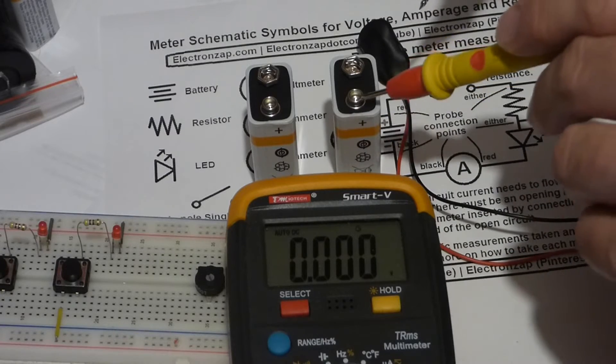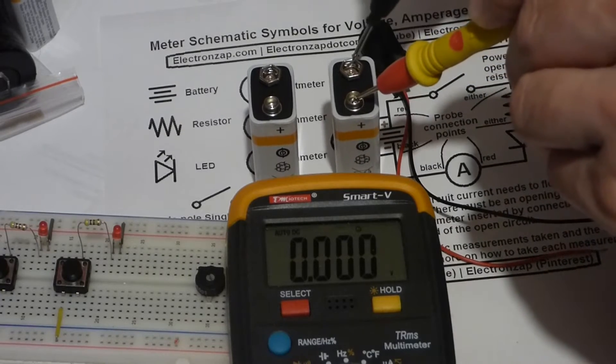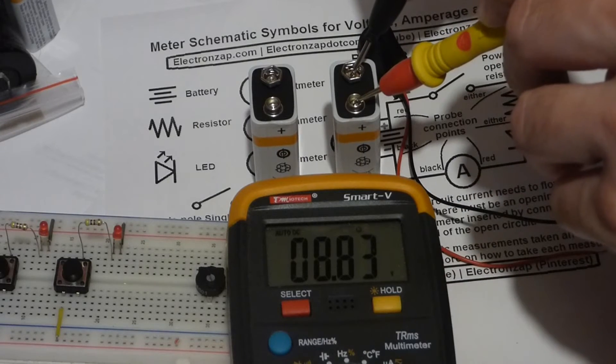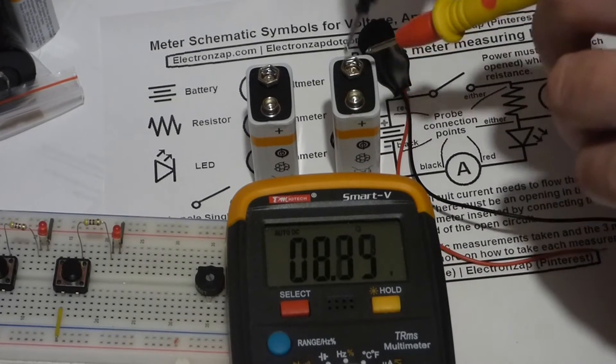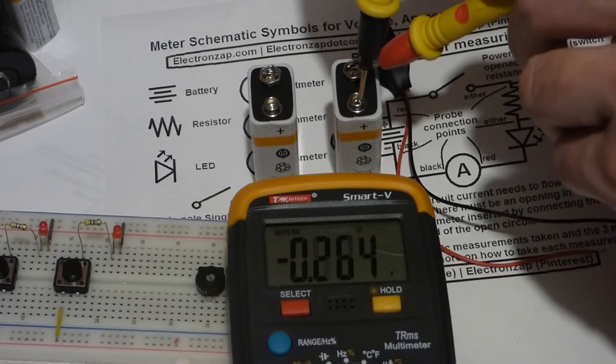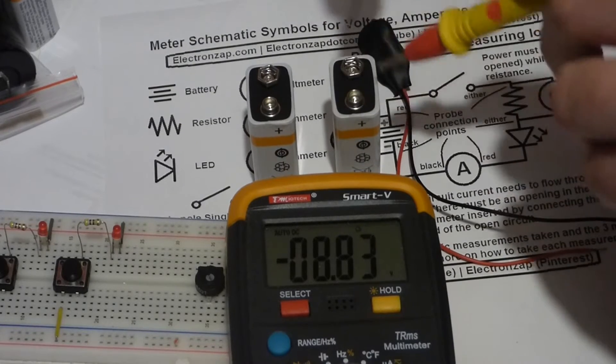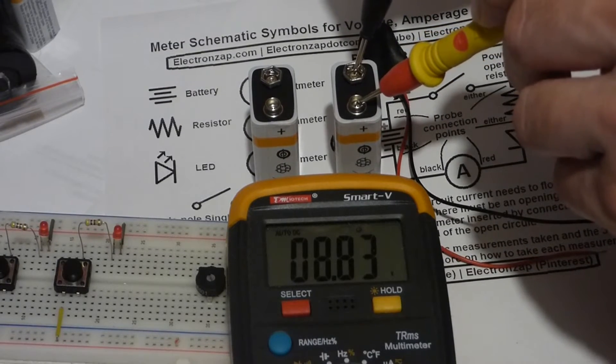Luckily these digital meters are usually made so if you accidentally put it backwards you just get a negative reading. But here you can see this battery has a little bit less than nine volts, 8.83 volts, and it's rated for nine volts so that's definitely acceptable.